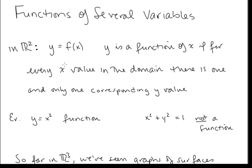When we have y as a function of x, what we're saying is that for every x value in the domain, there's one and only one corresponding y value. That's the definition of y being a function of x. So for example, y equals x squared is a function, but x squared plus y squared equals 1 is not a function, because for the same x value, you could have two different y values.